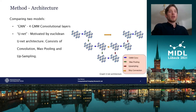We evaluated two models. The first network, referred to as GNN, consists of four Gaussian mixture model convolutional layers, each followed by a tanh activation function.